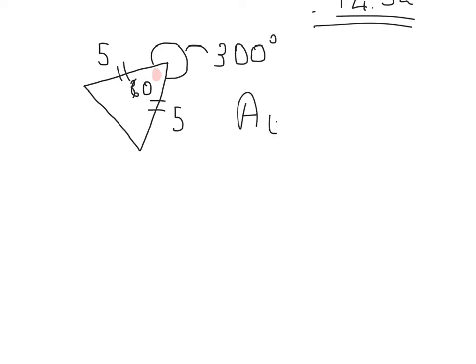So now we've got the information and it's a half times 5 times 5 times sine 60. And to one decimal place, that's 10.8 square centimeters.